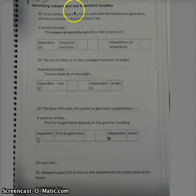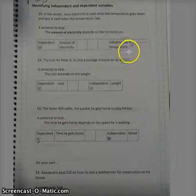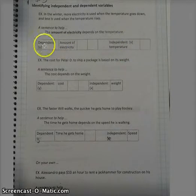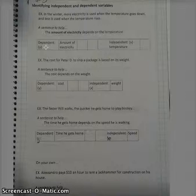So as you can see right here, we've written the amount of electricity as the Y and the temperature as the X because this is the dependent. So it is flipped a little bit. We're used to using the X on this side and the Y, but I think it's easy just to set it up this way because the sentence flows. The amount of electricity depends on the temperature. So there's your Y and your X.